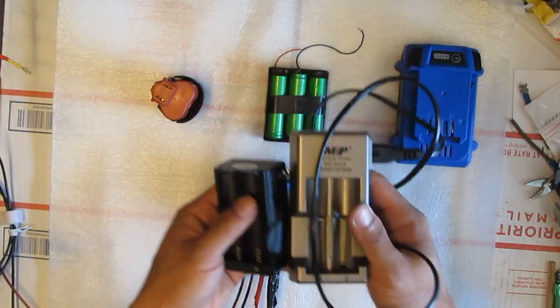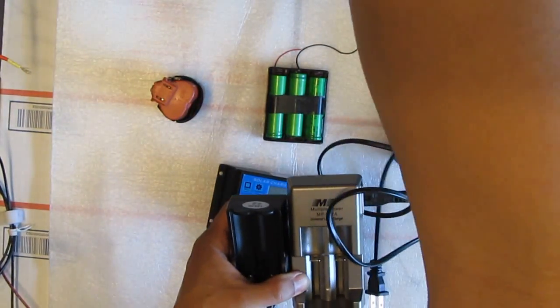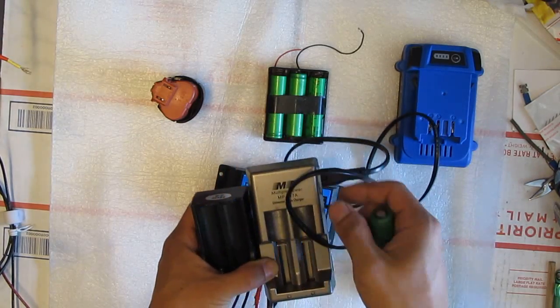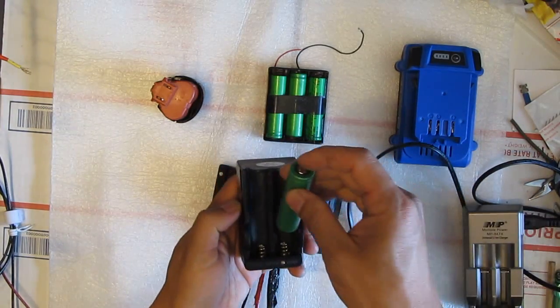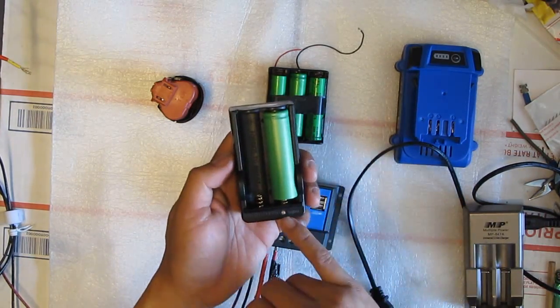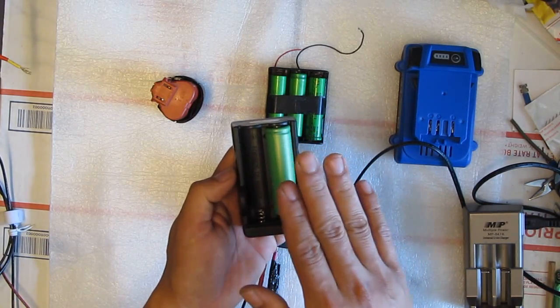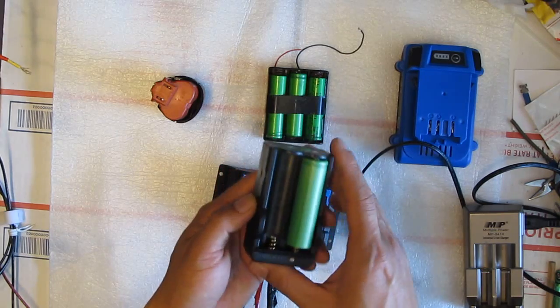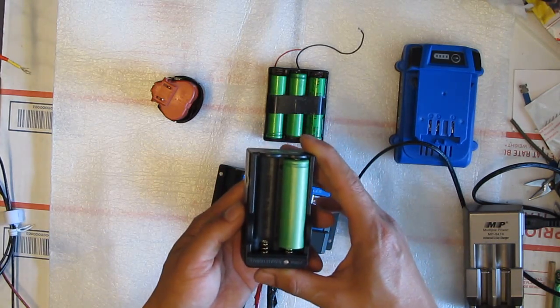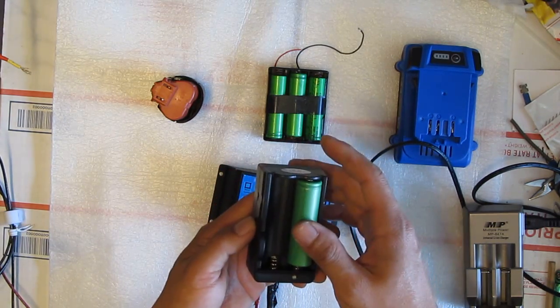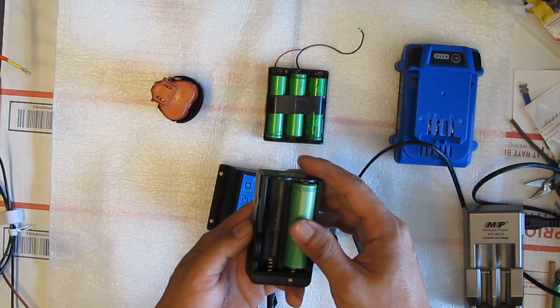Both of these would charge my 18650 cells. If I let it charge, right, when it's full and I don't remove it and I keep put it inside this charger here for a while. After it's full, it will charge my battery up to 4.25 volts.